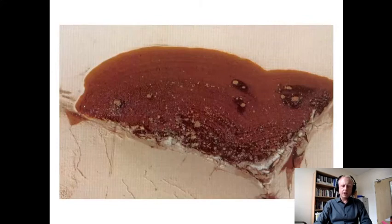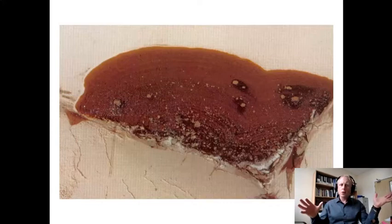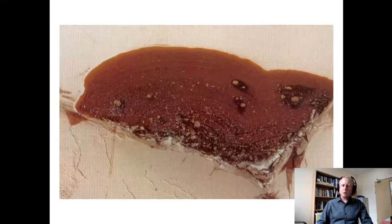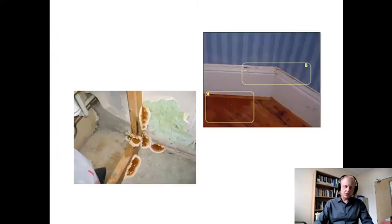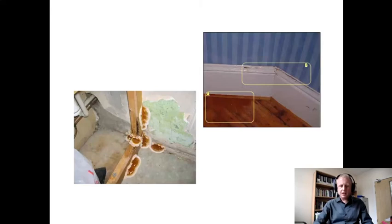Here's an example of one of the fruiting bodies. Serpula lacrymans spores are in the air all around us all the time, so all buildings have got the spores in them - it's a matter of whether you've got an area that's wet long enough for the spores to germinate. Here you can see some fruiting bodies; the majority of the fungus is underneath the wood. On the right here you can see the red dust forming, and underneath this paint it'll be starting to form that cuboidal cracking.